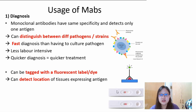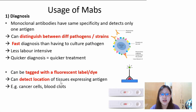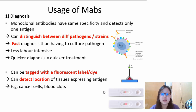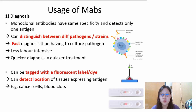Why do we want it to light up? Other than uses like in pregnancy tests when we want to see the color and the bands, it's actually very useful in detecting the location of tissues which express the antigen. For example, I can tag it with a radioactive dye, make it specific to cancer cells or blood clots, and we can take an MRI scan to see what part of your body lights up or is radioactive, in order to find out exactly where the cancer cells or blood clots are.